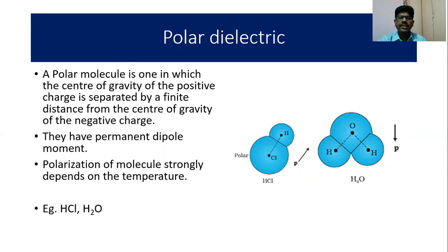Polar molecules have a permanent dipole moment. Polarization of these molecules strongly depends on temperature. You can see that in both HCl and H₂O a dipole is already existing, so such materials are called polar dielectrics.